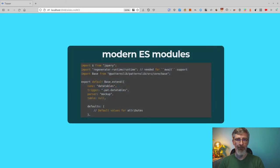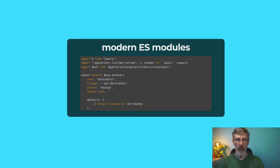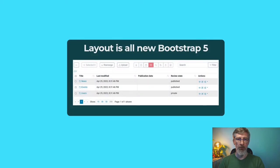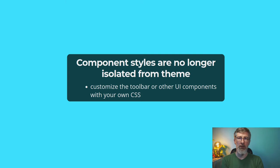What's new in Mockup? We have modern ES6 modules, which means you can now easily import existing libraries — install them with npm install or yarn add, import them, and use them in your code. The layout is now Bootstrap 5, the same as the default Plone theme Barceloneta uses. The components in Mockup are no longer isolated, so all stylesheets and CSS are directly affected by your CSS and your theme, which makes it easier to customize.